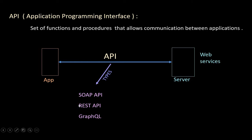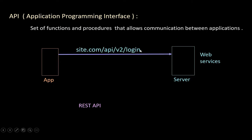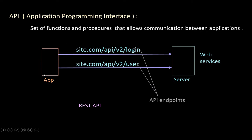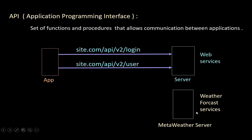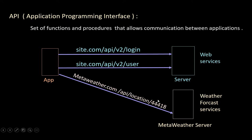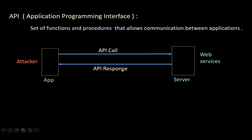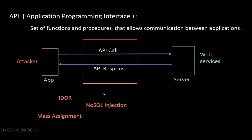Most of the applications we use today are using REST API. This is how a REST API request looks — it's a request for a login resource, and here is a request for user-related services. These different API calls are called API endpoints. An application can use multiple API endpoints, including endpoints for third-party servers, like a weather forecast server. If this application is used by an attacker, they can study the call and response of different endpoints and perform attacks like IDOR, Mass Assignment, NoSQL Injection, XXE, Command Injection, and JWT Manipulation.